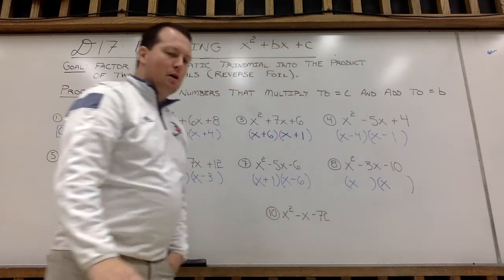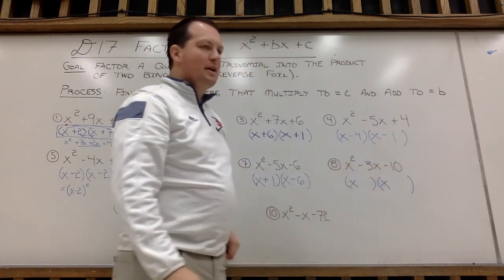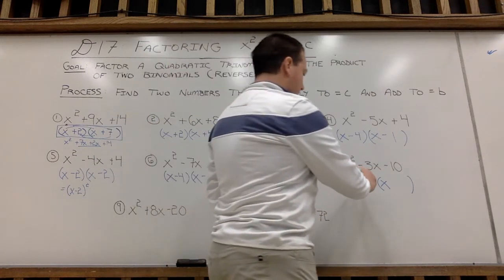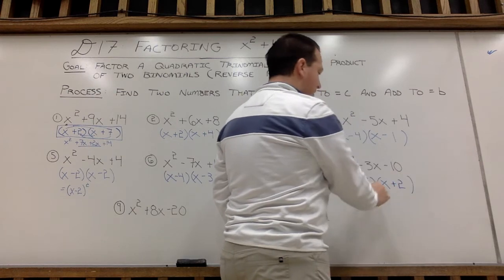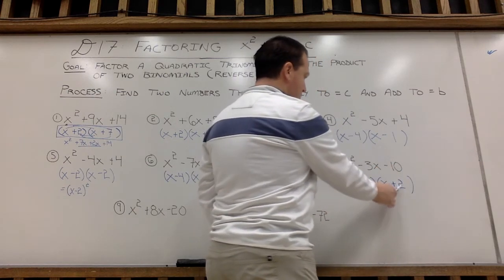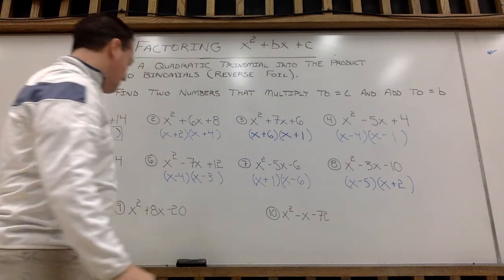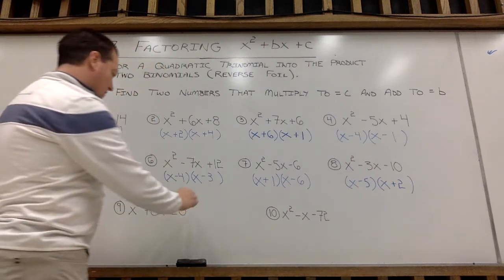Two numbers that multiply to make negative 10 and then add to make negative 3. I think if we go minus 5 plus 2. Negative 5 times 2, negative 10. Negative 5 plus 2, negative 3. All right, let's take a look at the last two here.